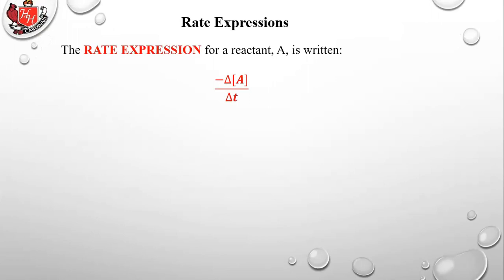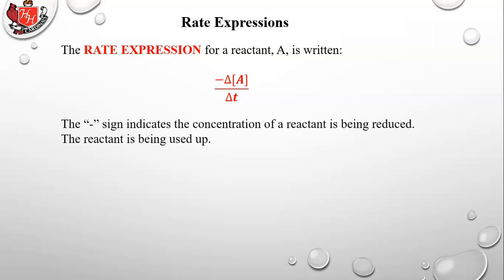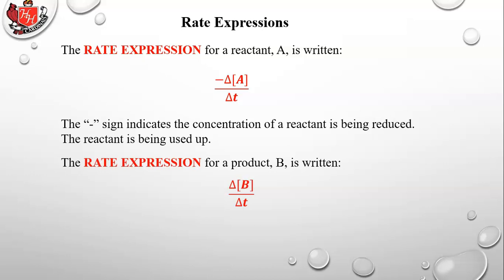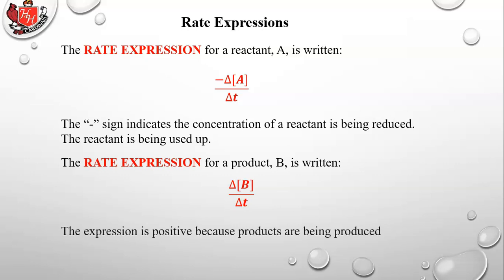The rate expression for a reactant A is written as negative delta [A] over delta T — the negative sign indicates the concentration of a reactant is being reduced, being used up. The rate expression for a product B is written as delta [B] over delta T, and the expression is positive because products are being produced.